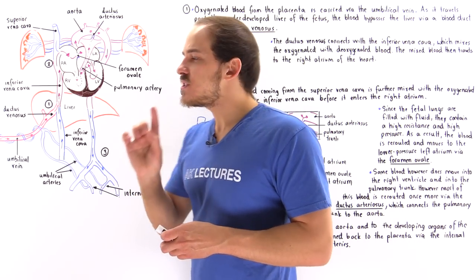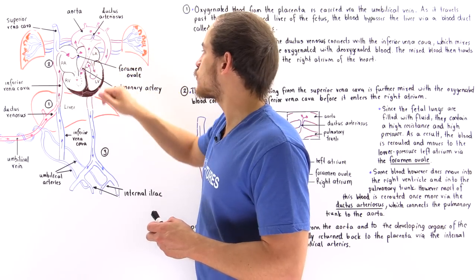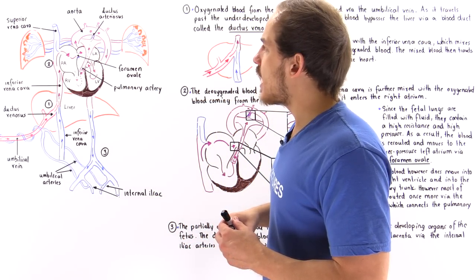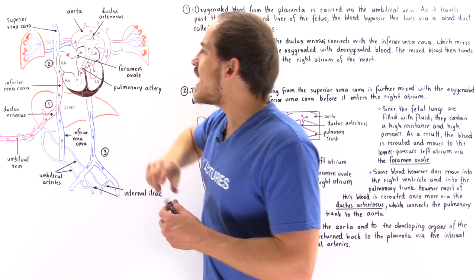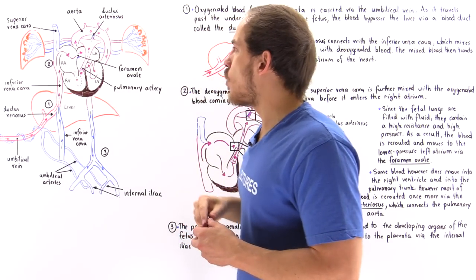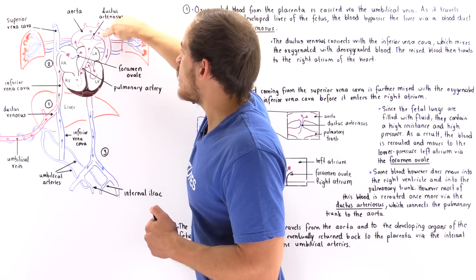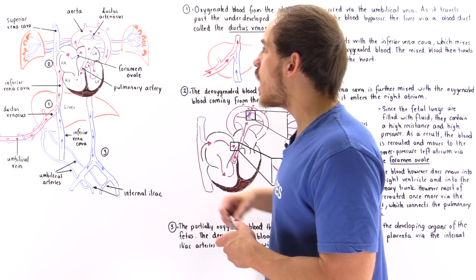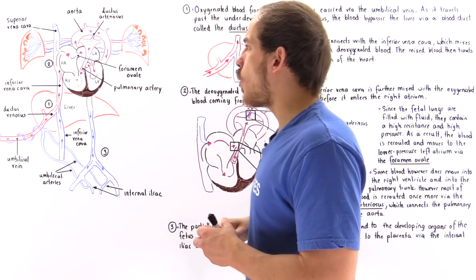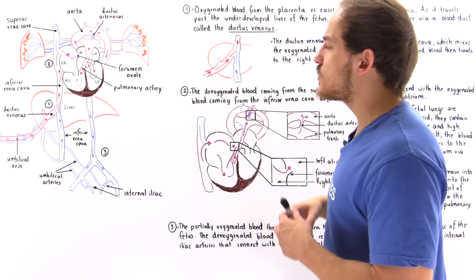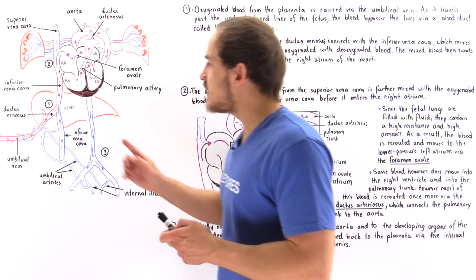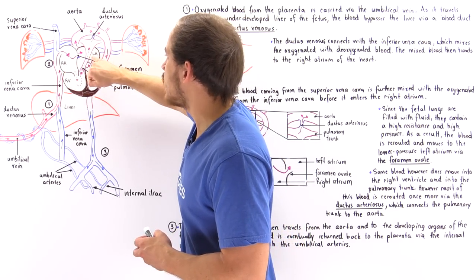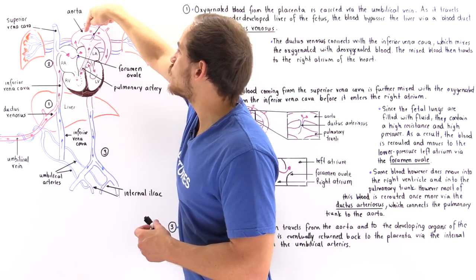A small portion of the blood will still leak into the right ventricle and then pass into the pulmonary trunk, which connects to the right and left pulmonary arteries. At the pulmonary trunk, we have yet another connection — this time between the pulmonary trunk and our aorta — that allows rerouting of blood from the pulmonary trunk directly into the aorta. So we have three different shunting processes: one between the umbilical vein and the inferior vena cava, a second between the right atrium and the left atrium, and a third between the pulmonary trunk and the aorta.